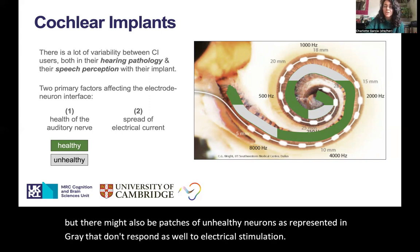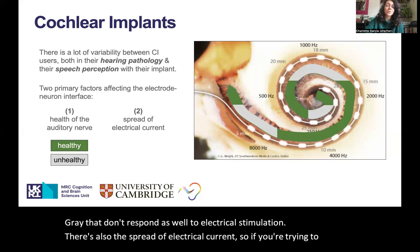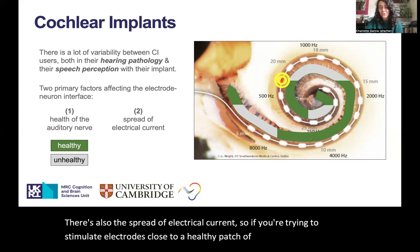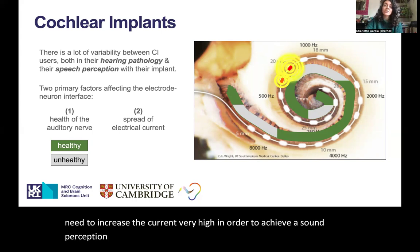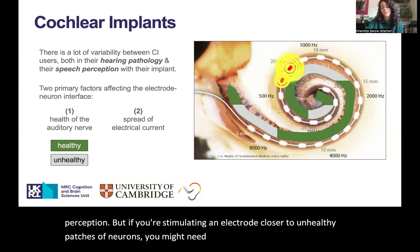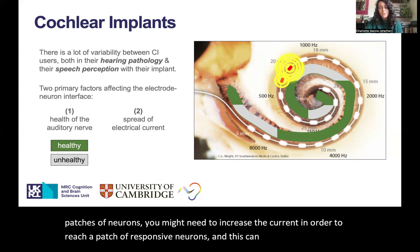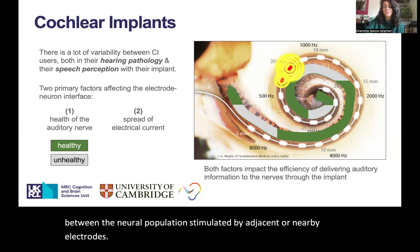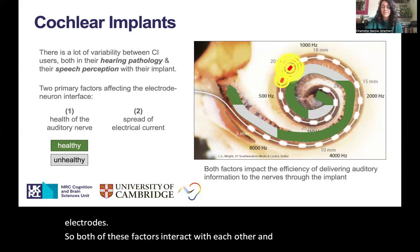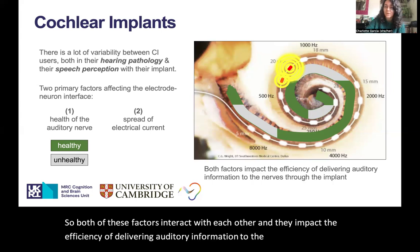There's also the spread of electrical current. If you're trying to stimulate electrodes close to a healthy patch of neurons, you might not need to increase the current very high in order to achieve a sound perception. But if you're stimulating an electrode closer to unhealthy patches of neurons, you might need to increase the current in order to reach a patch of responsive neurons. And this can create overlap between the neural population stimulated by adjacent or nearby electrodes. Both of these factors interact with each other and impact the efficiency of delivering auditory information to the nerves through the implant.